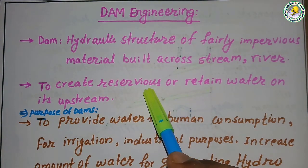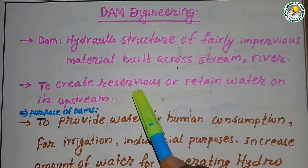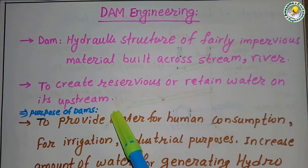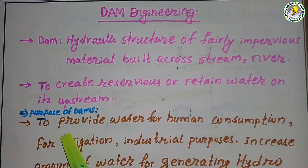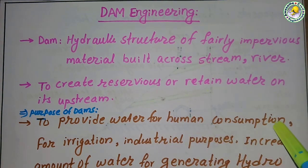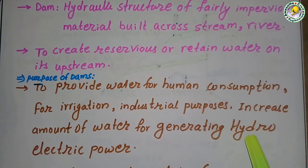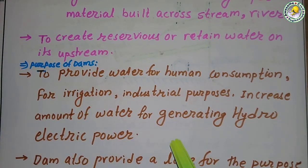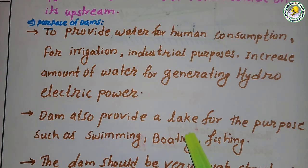It is especially designed to store water on the upstream of the river. Purpose of a dam: why dams are made? To provide water for human consumption, for irrigation in the fields, for industrial purposes, and to increase the amount of water for generating hydroelectric power.